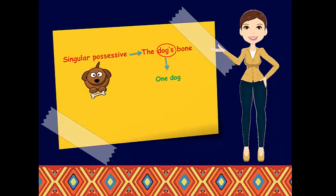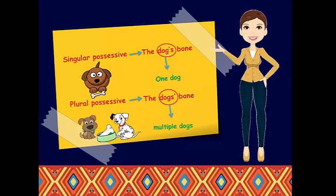If you had multiple dogs that share the bone, it will be like, the dogs' bone. D-O-G-S, then apostrophe.